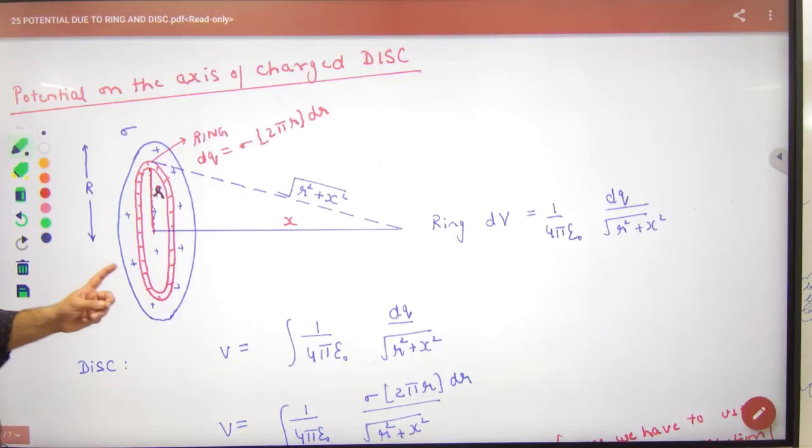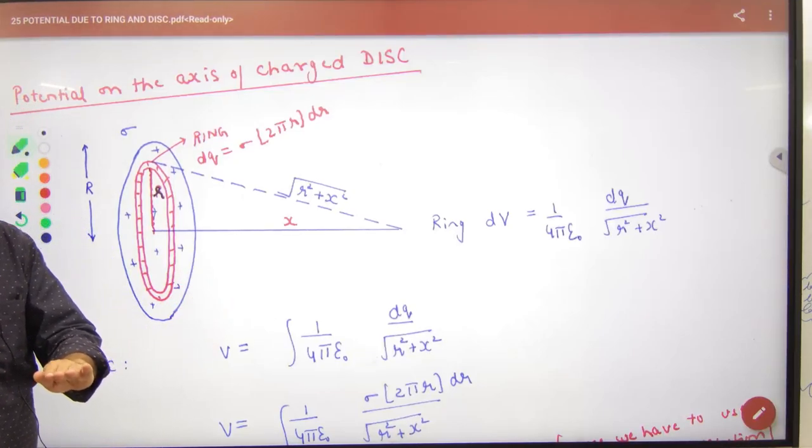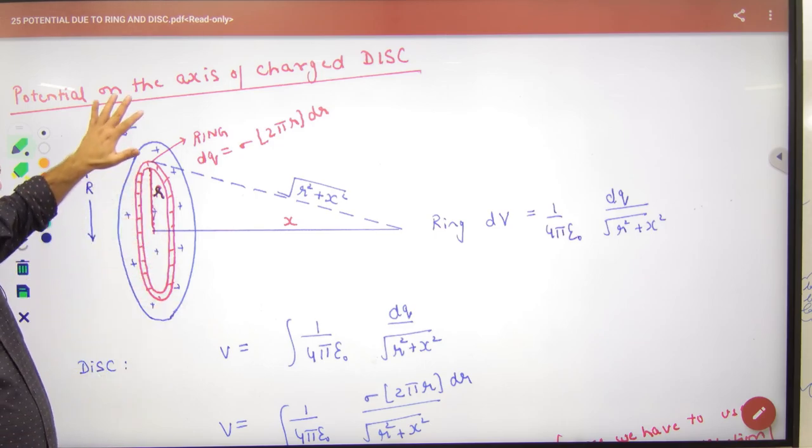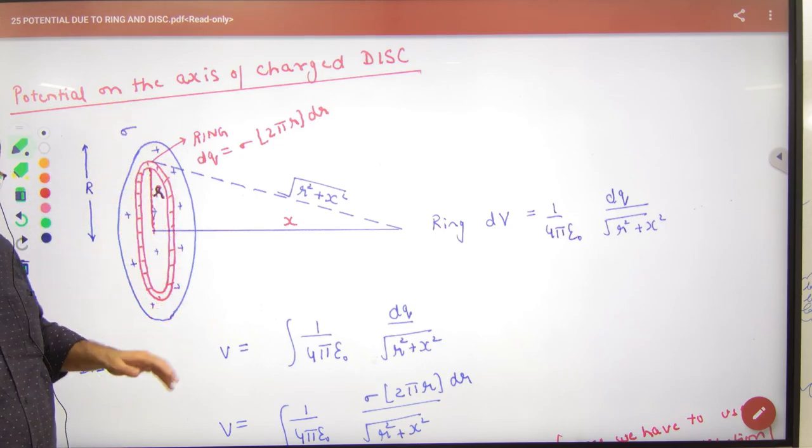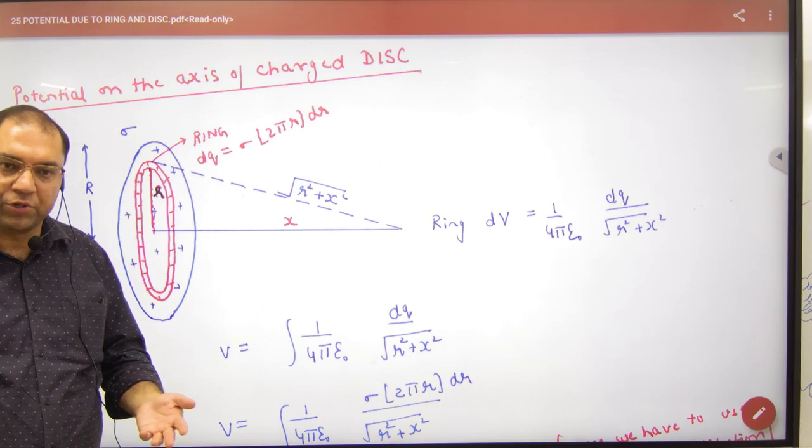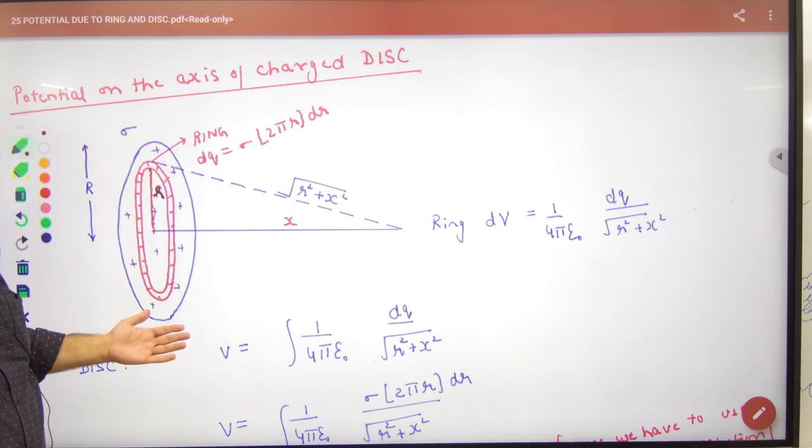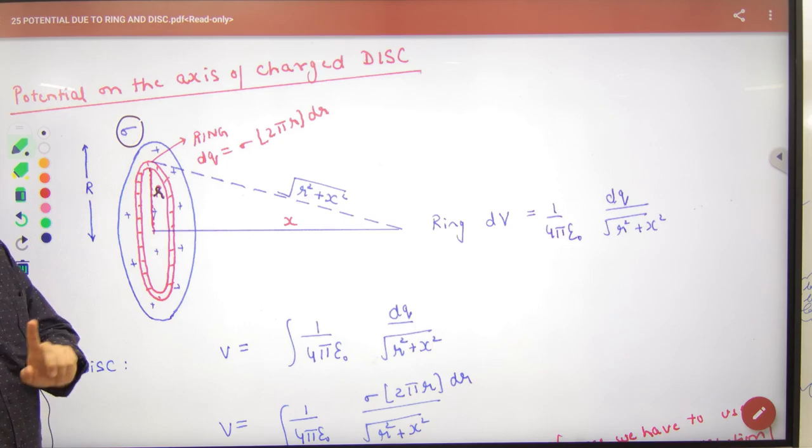To find the potential on the axis of a charged disc, we start with how the charge is distributed over the surface area. What do we use for the surface charge density? Sigma.